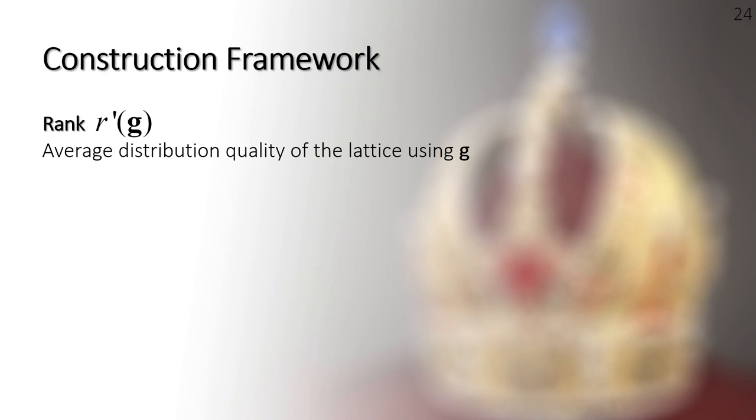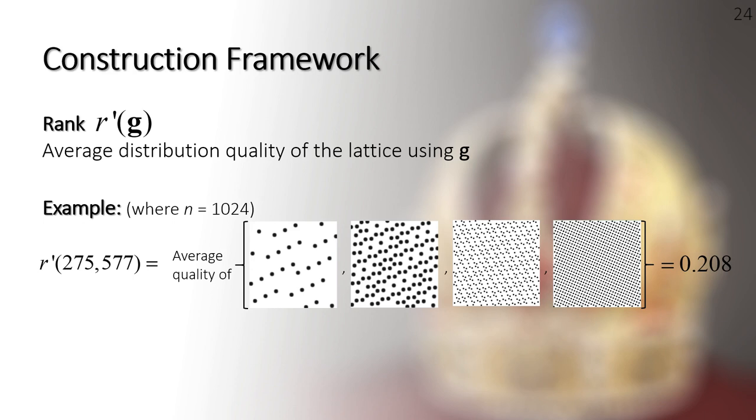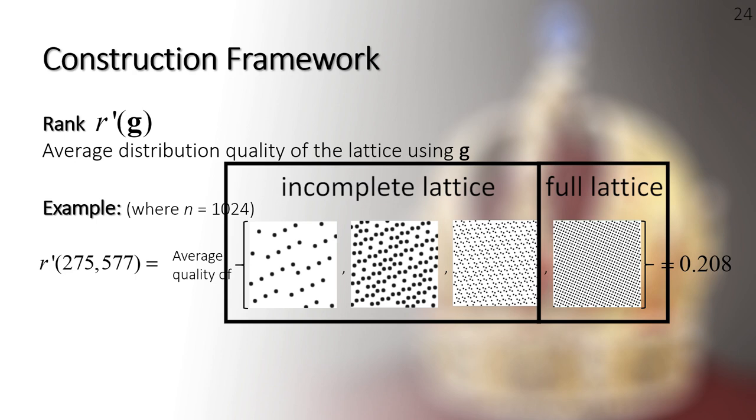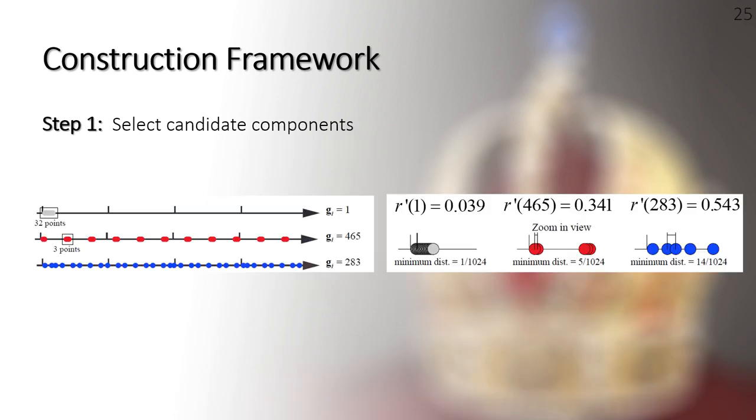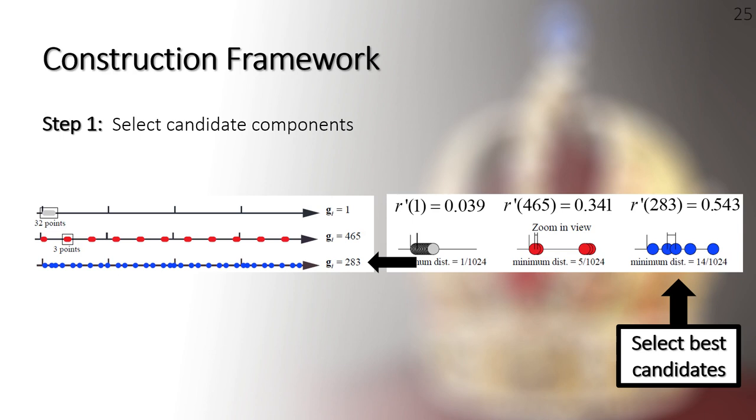Next, we provide a rank function. Given the total lattice point count n and a set of non-empty components, this rank here evaluates the average distribution quality of the corresponding lattice sequence in complete and incomplete forms. In particular, when we input a single component, this rank evaluates the distribution quality of its points on the 1D axis. Due to the time limit, we won't go into too much detail of the rank. Using this rank, we can implement the first step of the framework to select candidate components for the generator vector g. We need to calculate the ranks for all odd numbers smaller than n, and then select the s components with the highest rank, where s is the dimension of the generator vector.